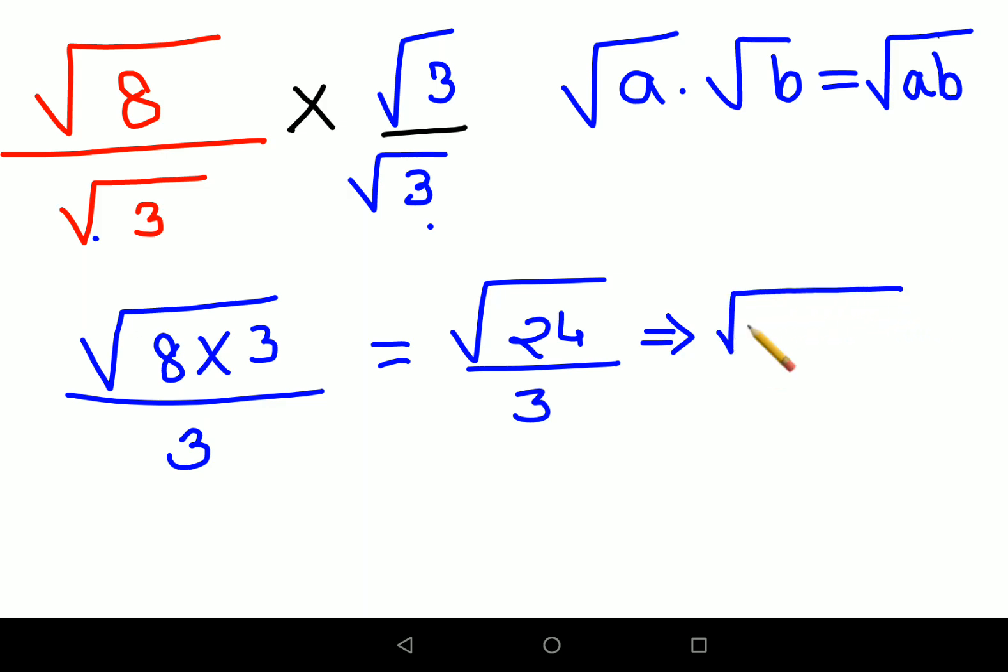Either you can do prime factorization like 2 times 2 times 3 times one more 2, and this is still upon 3. Now obviously there is a square root, so you will remove the pairs and take one digit for that pair.